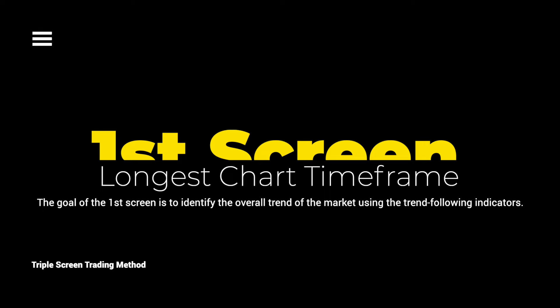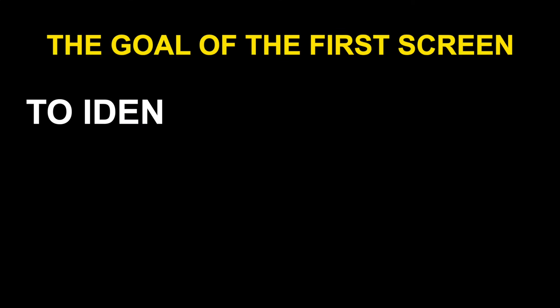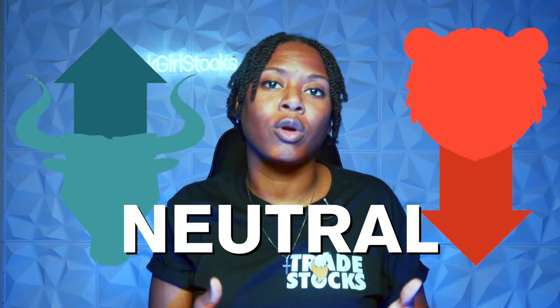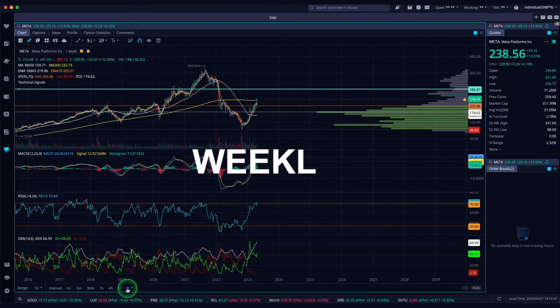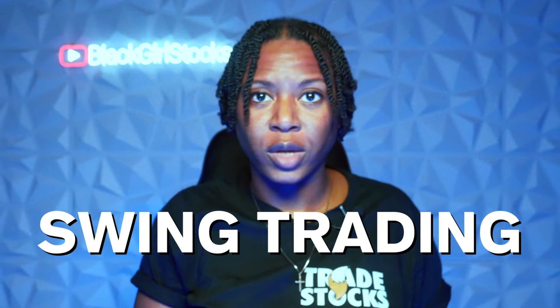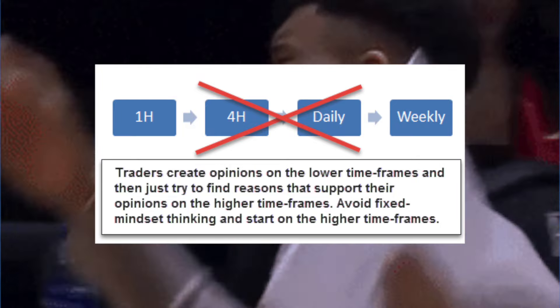Let's start with the first screen — our long-term chart. The goal of the first screen is to identify the overall trend of the market using trend-following indicators. When you can see the big picture, you have a better idea of where the price is headed — that's where the real money is going to be made. Knowing this helps determine whether you should be bullish, bearish, or neutral on the stock. The first screen starts on a time frame five increments higher than the time frame you plan to trade with — usually a daily or weekly chart for swing trading, and a four-hour to 15-minute chart for day traders. Always start with the furthest trend; if you look at the closest time frame first, it's going to ruin the trade because you'll already have preconceived notions about what's happening short-term.